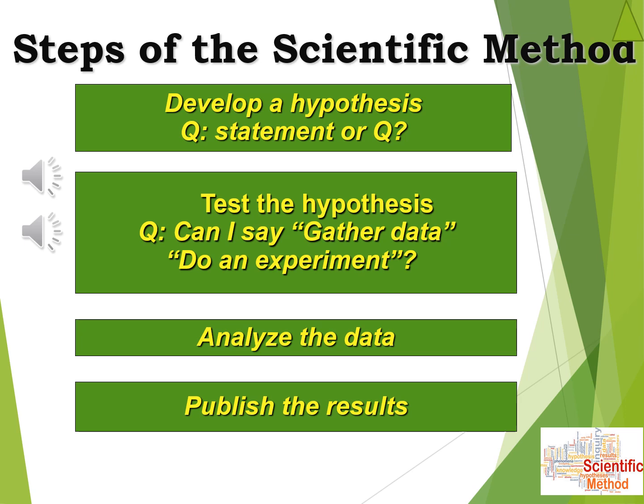I've listed some of the different ways of testing the hypothesis: observational research, case study, survey, correlational study, experiment, and additional options as well. After gathering data, the next step is to analyze the data — you could also say interpret it or apply statistics. More than just one word. The last step — which many students miss — is to publish the results, or share the results. Make sure you can easily list all four steps of the scientific method.